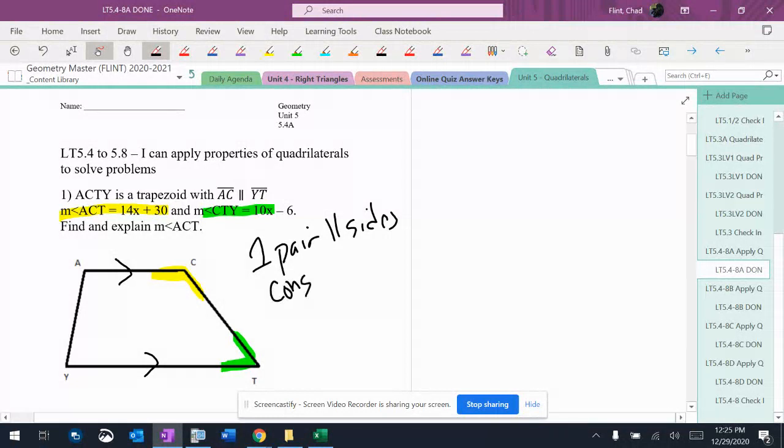That's what happens here. We have consecutive interior angles that are supplementary, which means green plus yellow equals 180.